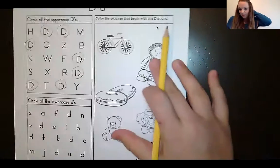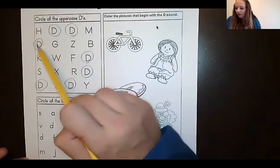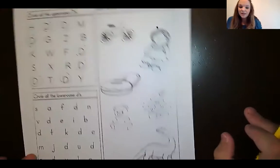Good job, my friends. Let's count how many uppercase Ds we have all together. One, two, three, four, five, six, seven uppercase Ds.